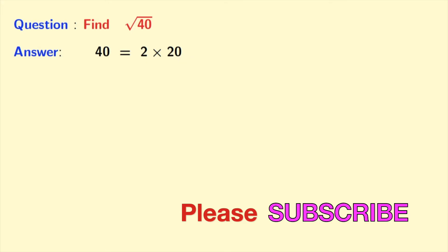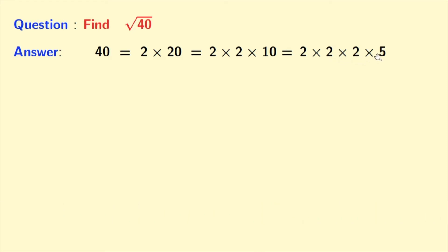So we will write it as 2 times 10, and that gives us 2 times 2 times 10. Now we know that 10 is equal to 2 times 5, so we will write 2 times 5 and we have 40 equal to 2 times 2 times 2 times 5. Now we will take square root on both sides, and taking that